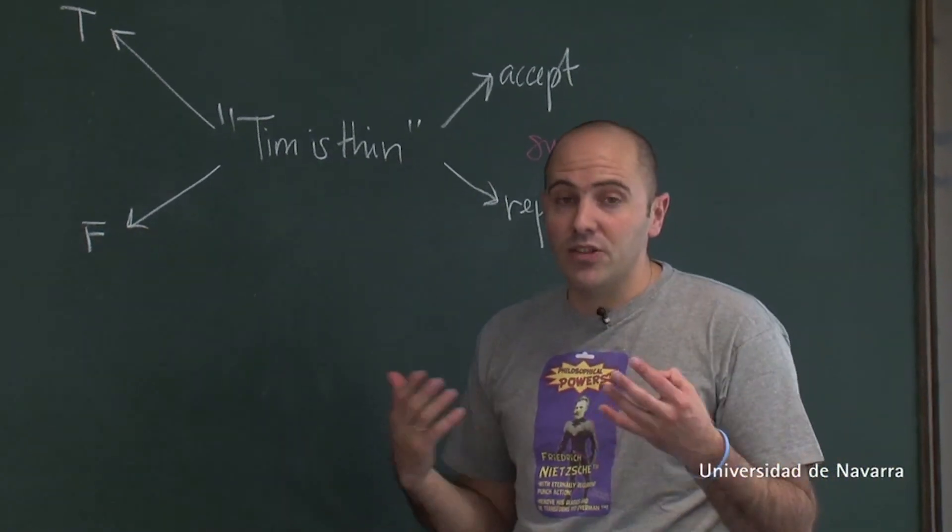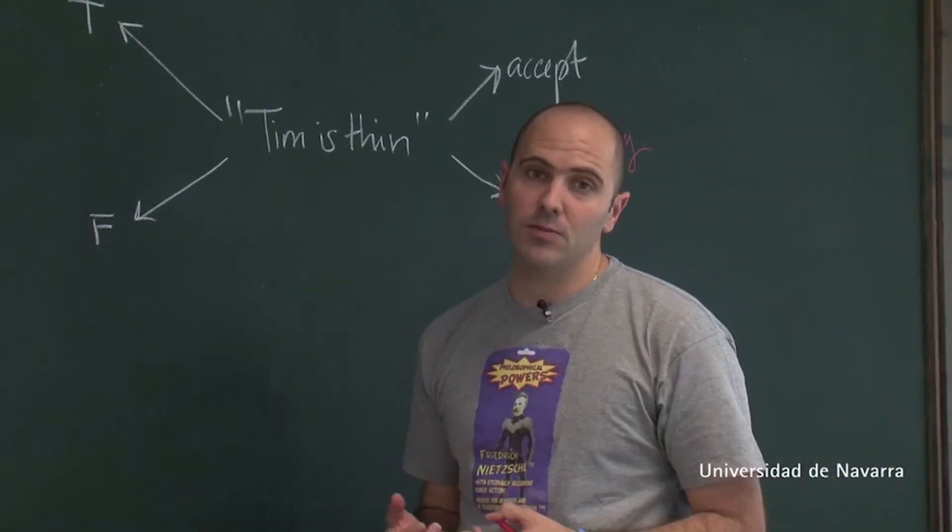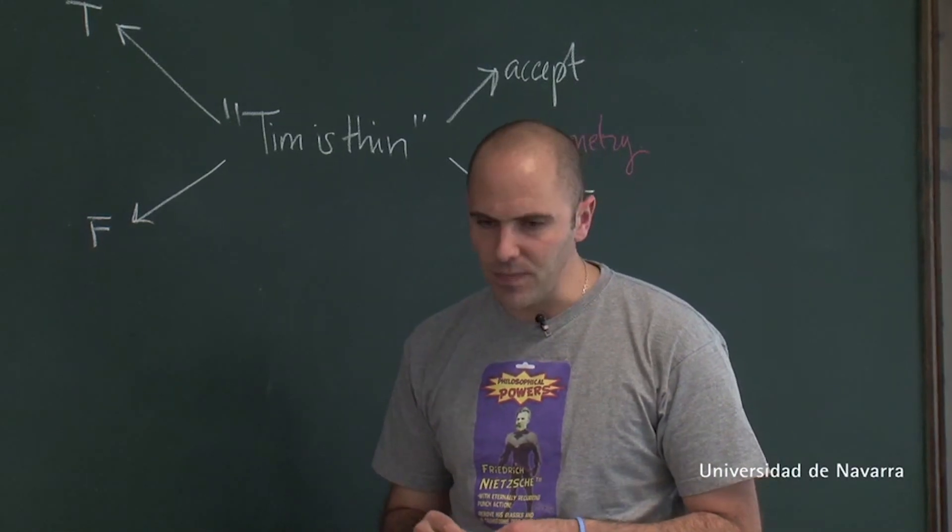So classical semantics forces you to introduce an asymmetry where seemingly our use of the predicates is known. And this seems utterly impossible if meaning is determined by use.